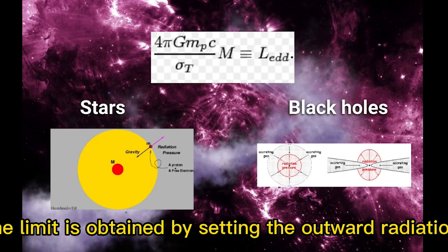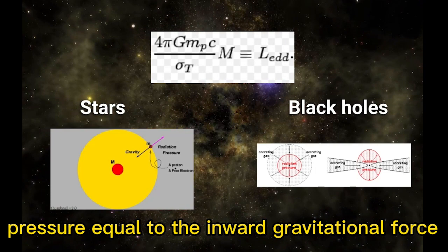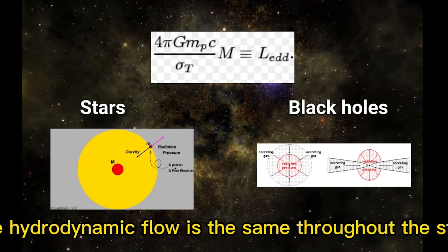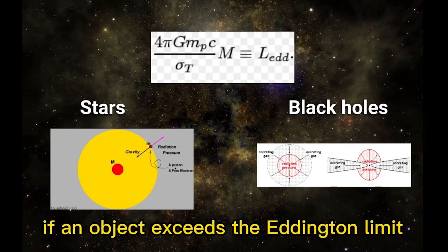The limit is obtained by setting the outward radiation pressure equal to the inward gravitational force. Both forces decrease by inverse square laws, so once equality is reached, the hydrodynamic flow is the same throughout the star. If an object exceeds the Eddington limit, it will generate radiation that pushes back and prevents further growth.